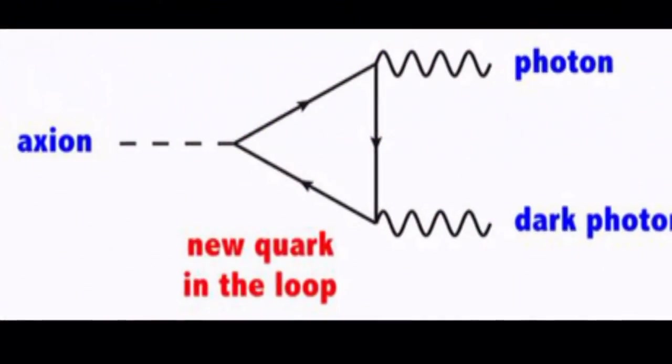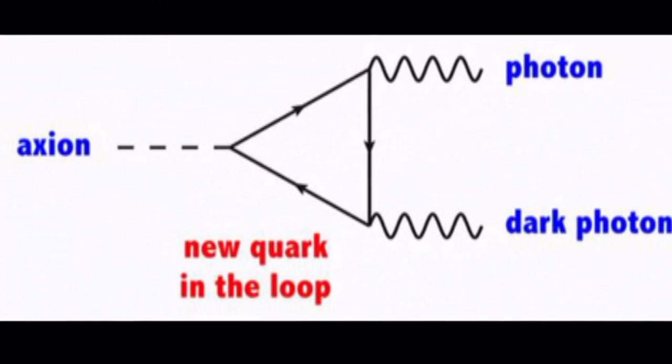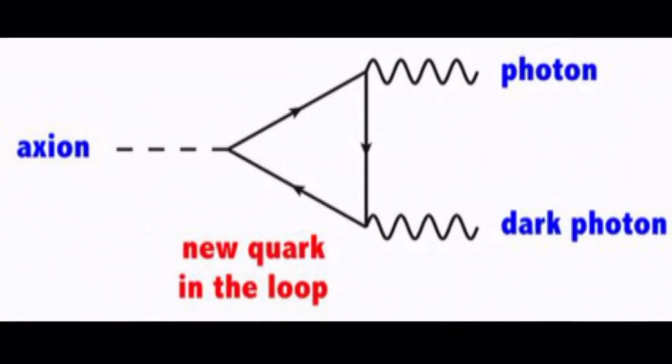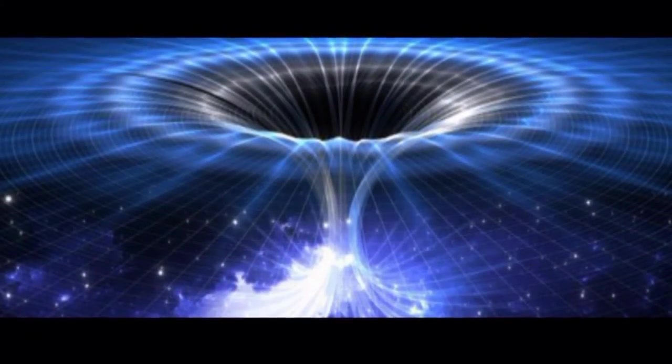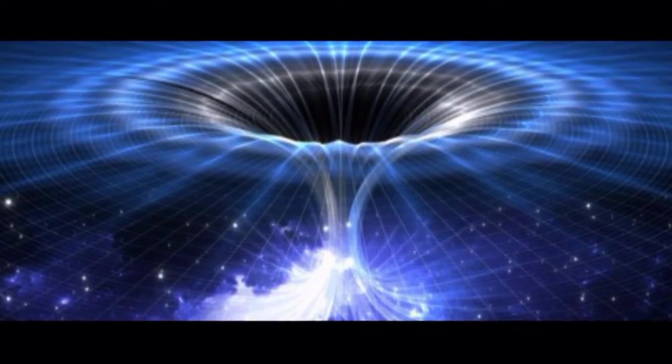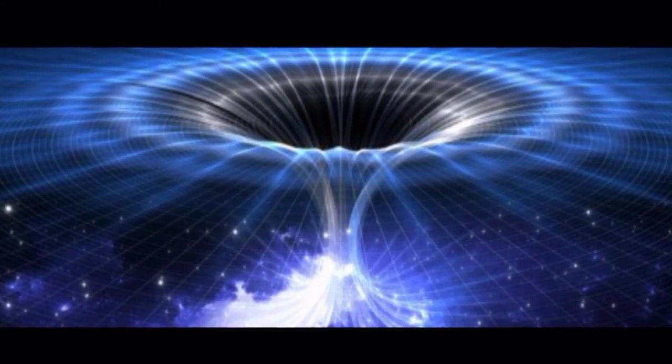What if there's a portal that bridges the gap between the standard model to dark matter and dark energy? The idea is that the reason we struggle to understand things such as dark matter and dark energy isn't because they don't exist. It's because we've been oblivious to a portal through which regular particles and these dark particles interact. And it's something that could be tested experimentally.